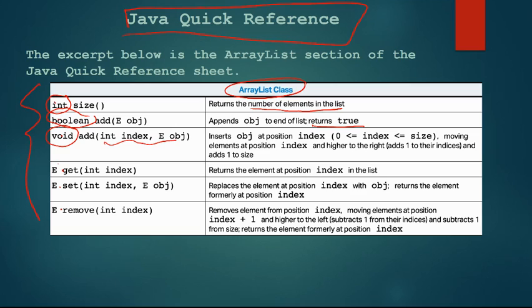The get method the return type is E. E means that it is an element of the array and that means that whatever the object type is for the array is what it will return. If it's a student array holding student objects it will return the student object at the index specified in the parameters. So it returns the element at that position defined by the index.